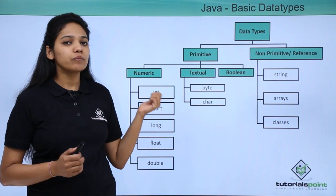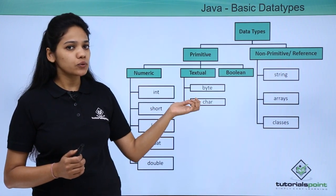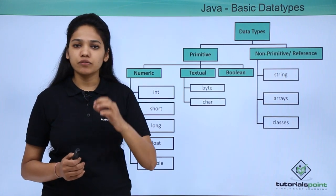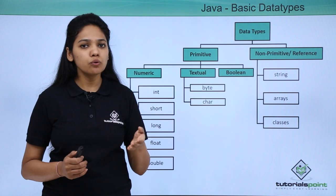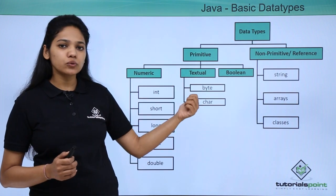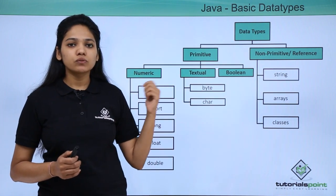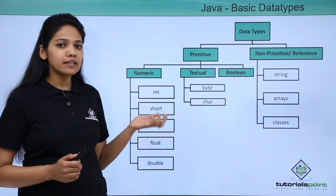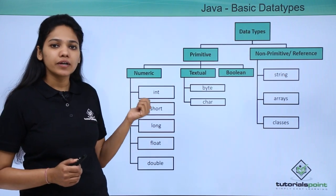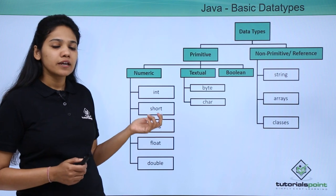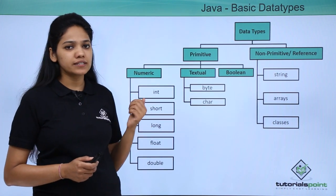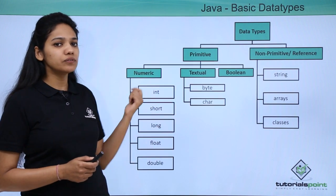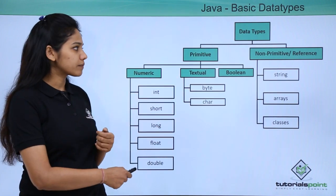In primitive data types you have numeric, textual, and boolean. Boolean provides 1-bit information that may be true or false. Textual includes byte or char, which allows single-character information. Numeric is nothing but int, long, short, double, float, and so on. Let us now understand the comparisons of each of these primitive data types.